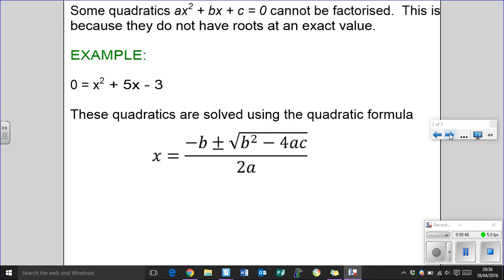What we use to solve these quadratics such as x² + 5x - 3 = 0 is the quadratic formula: x = (-b ± √(b² - 4ac)) / 2a.